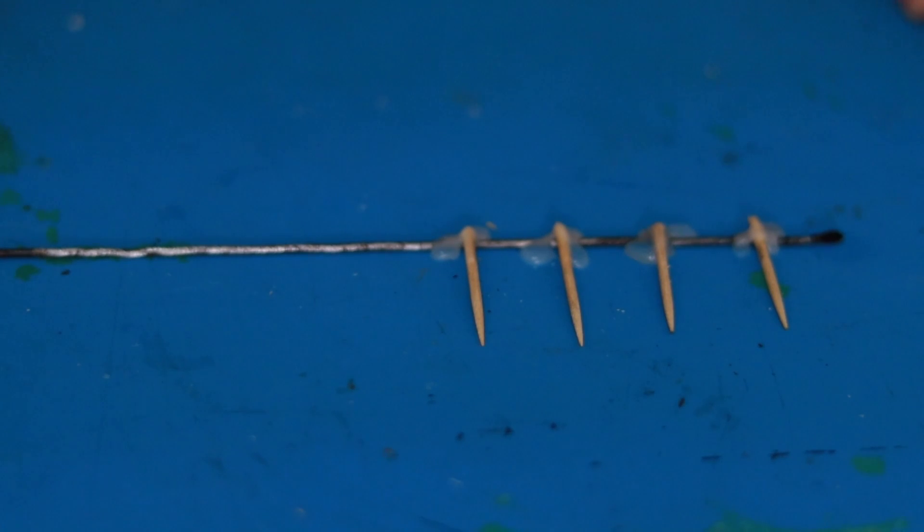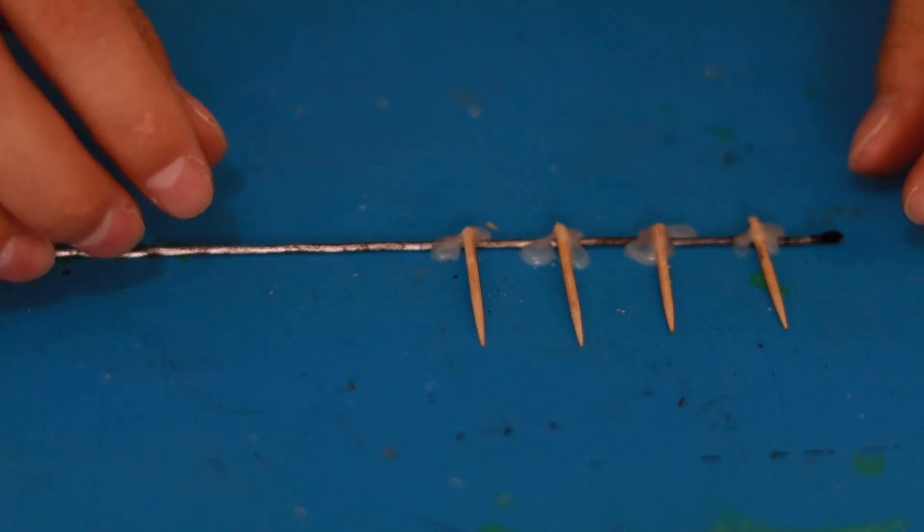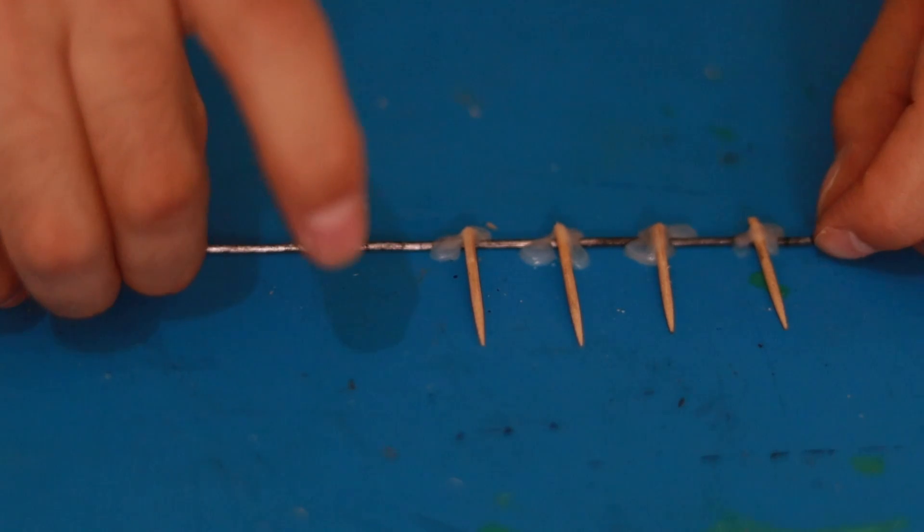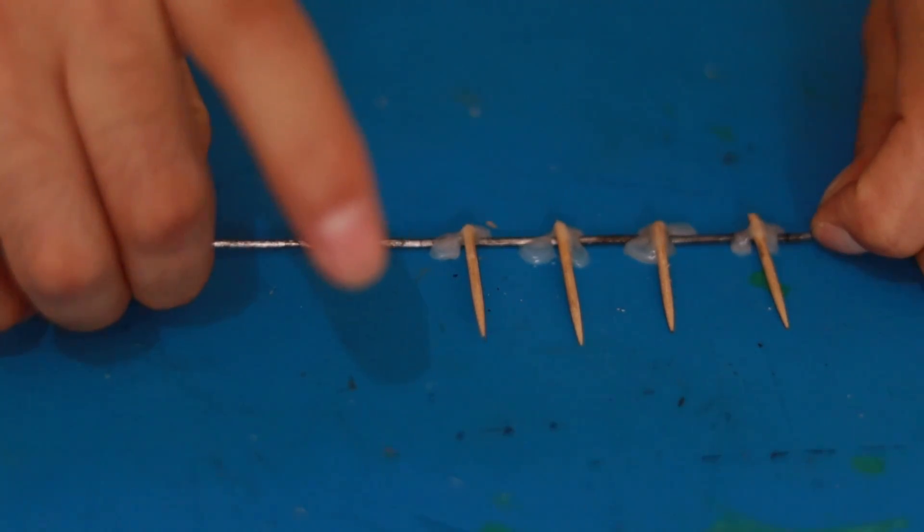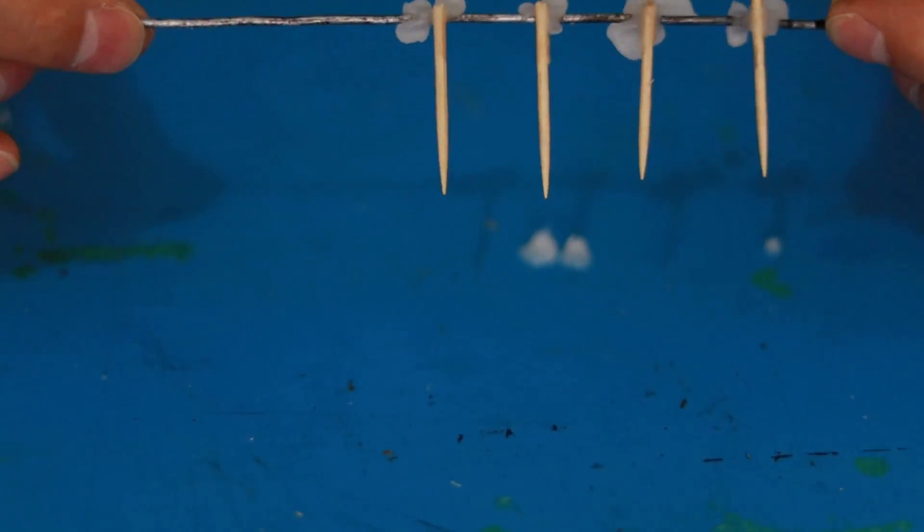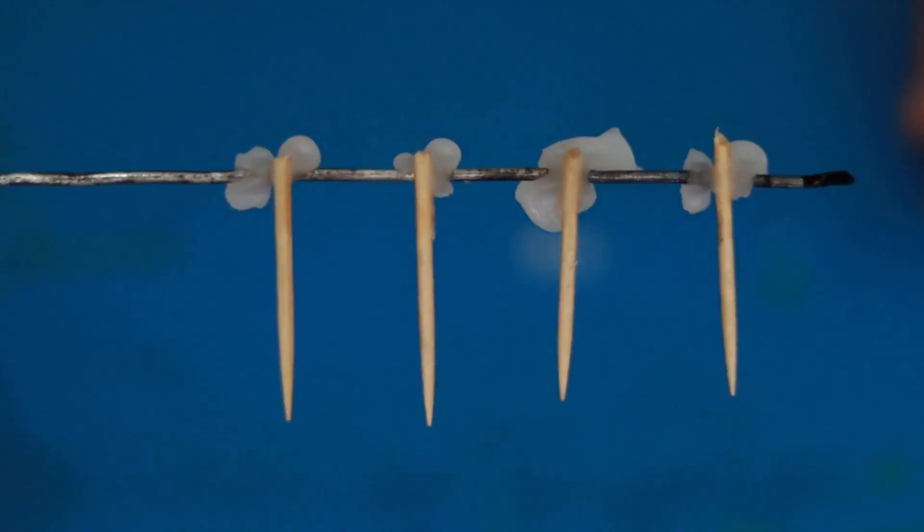Let's wait for the wax to cool down a bit. And now very carefully we are going to peel it off so that our toothpicks are stuck to the wire.